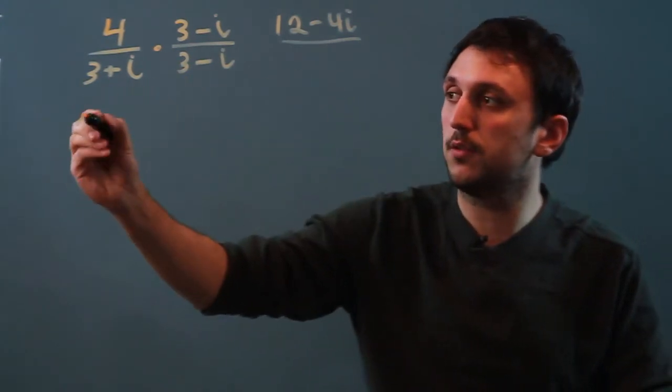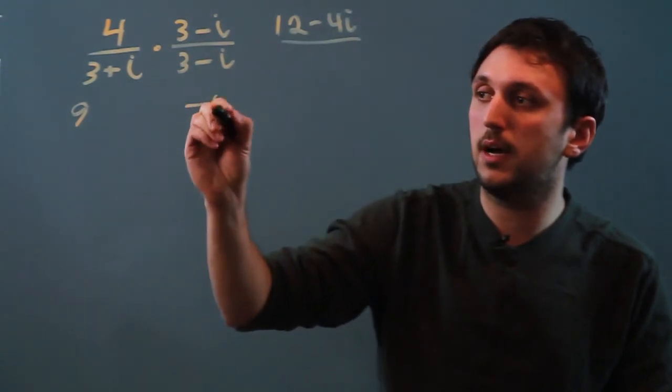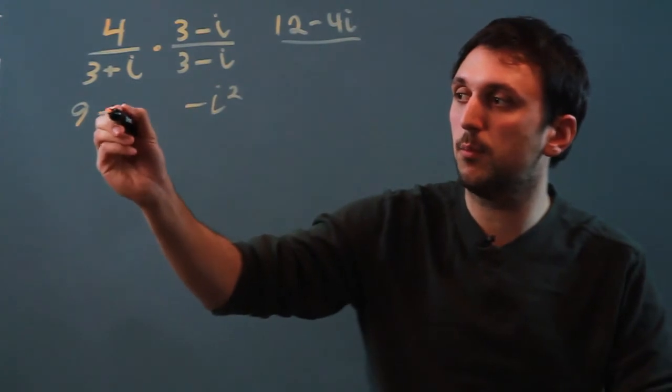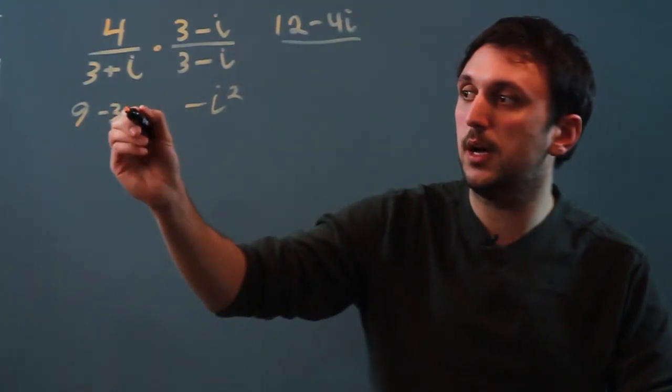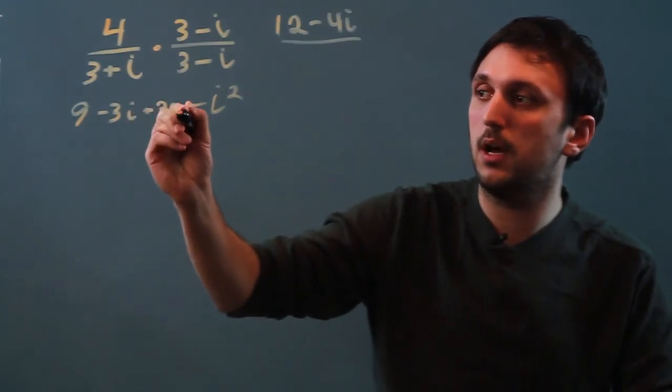3 times 3 is 9. And then i times negative i is going to be negative i squared. And then in the middle we have 3 times negative i, so minus 3i. And then plus i times 3 is plus 3i.